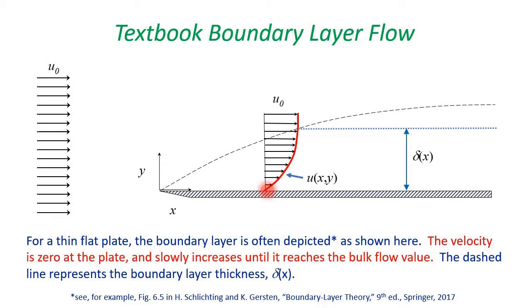If we look in the direction normal of the plate, the velocity increases from zero until it reaches the bulk flow value U sub zero. The boundary layer thickness delta is the point where the flow velocity essentially returns to the bulk flow value, here represented by the dashed line. The red line is the boundary layer velocity profile U, defined as the velocity at point X for all Y.